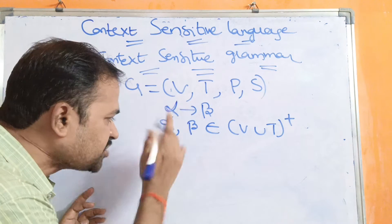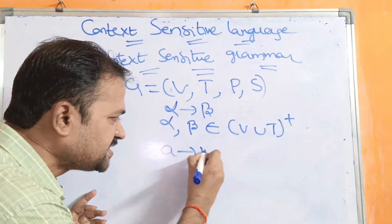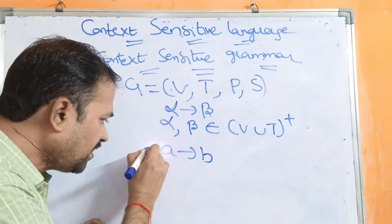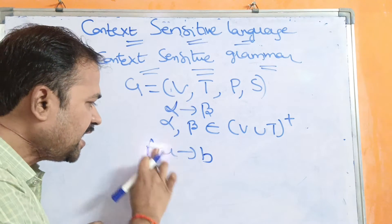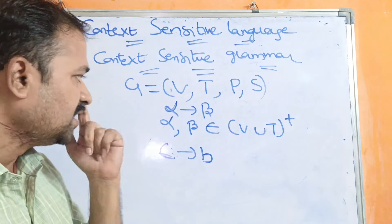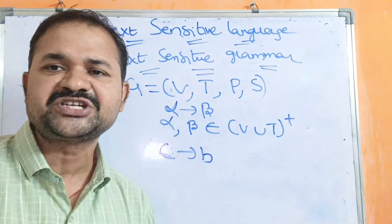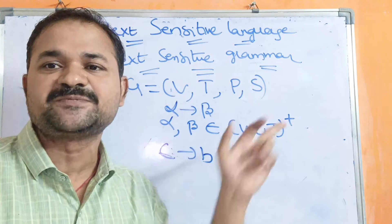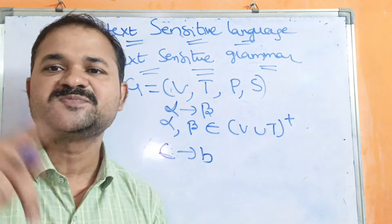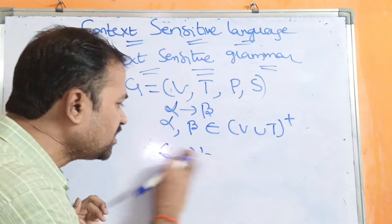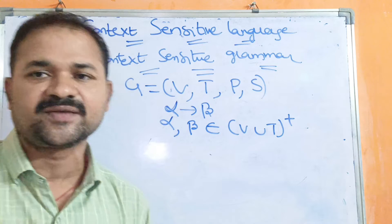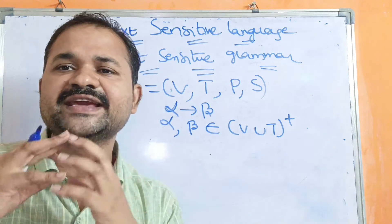Left hand side production should not be like 'a implies B', because here left hand side production is a terminal symbol. The second condition is that beta, the right hand side production, should not contain epsilon. So left hand side should contain minimum one non-terminal and should not contain epsilon, and right hand side should not contain any epsilon.